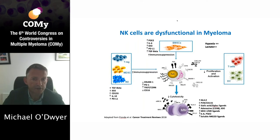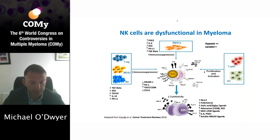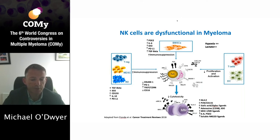However, NK cells are dysfunctional in myeloma, and with the transition from MGUS to multiple myeloma, there is a progressive loss of function in NK cells for multiple reasons, even though the numbers of NK cells are not reduced. Dysfunction is due to factors such as decreased expression of activation receptors, shedding of ligands for activation receptors, increased expression of inhibitory checkpoints on NK cells and their ligands, both on myeloma cells and immunosuppressive cells within the tumour microenvironment, hypoxia, and soluble immunosuppressive factors such as lactate, PGE2, IL-6, and TGF-beta.